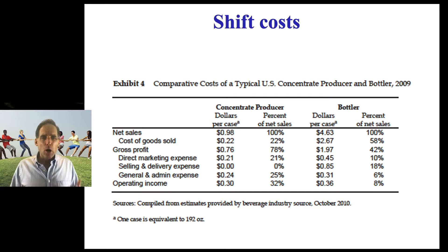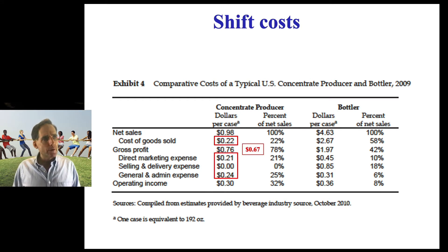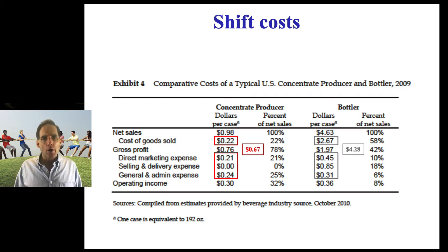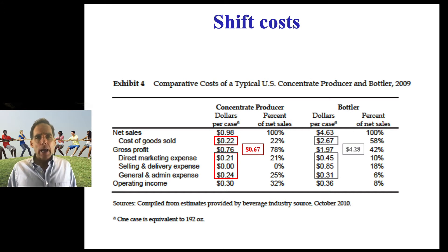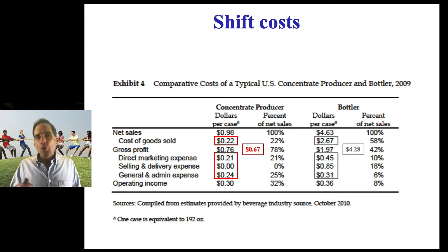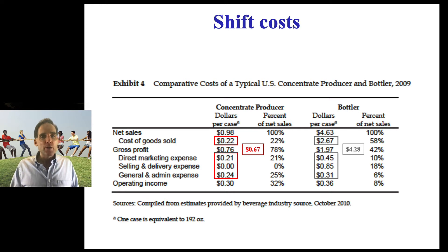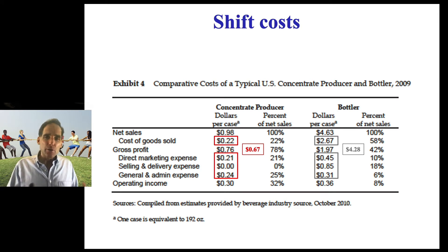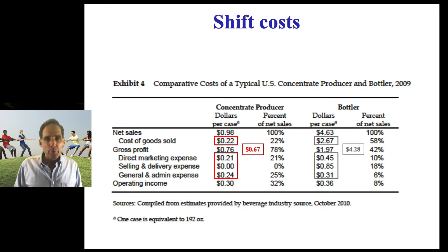Another way the more powerful party can exert its bargaining power is by requiring the less powerful party to bear costs. Again, we'll turn to an example from the Coca-Cola case. The total system costs required to produce and sell a case of soda amount to nearly $5, and almost 90% of this cost is being borne by the bottlers. Since somebody has to pay those costs for Coca-Cola and Pepsi to make money, in a world with more even bargaining power they might be bearing more of those costs directly — in terms of marketing expense or SG&A. But again, this is strongly suggestive that the concentrate makers have more bargaining power and are able to push these costs onto the income statements of their bottlers.